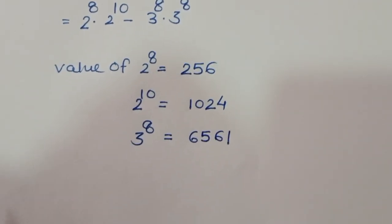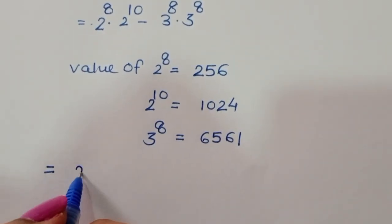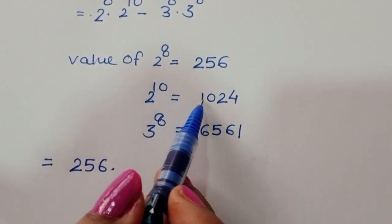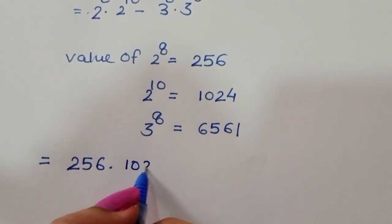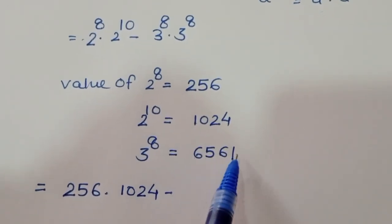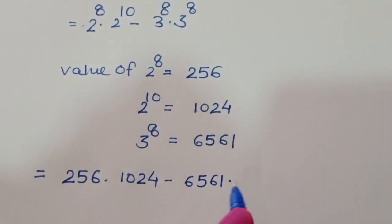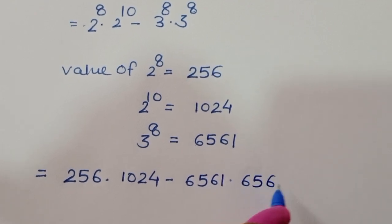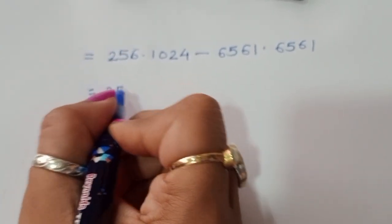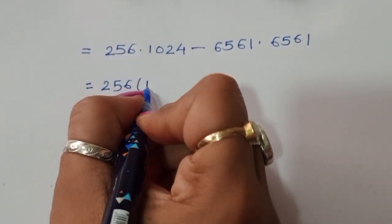So we can write: 256 times 1024 minus 6561 times 6561. The value of 2 power 8 is 256, 2 power 10 is 1024, and 3 power 8 is 6561.